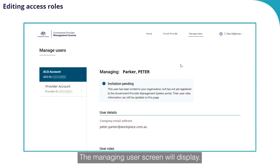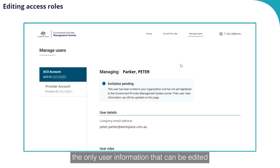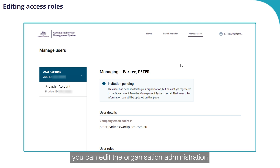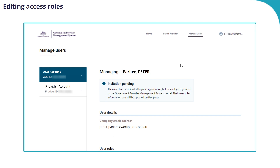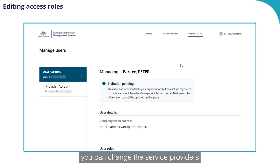The Managing Users screen will display. At this point in time, the only user information that can be edited is the user access roles. For ACO level users, you can edit their organisation administration and star ratings reviewer org access. And for provider level users, you can change the service providers they have access to star ratings for.